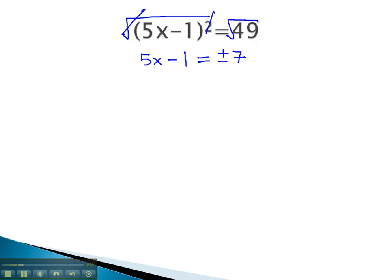We will then continue solving this equation, treating the plus or minus 7 like an unlike term. This means when we add 1 to both sides, we will not combine them together, but instead write 5x equals 1 plus or minus 7.